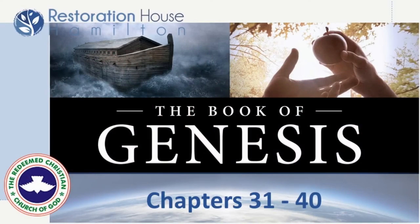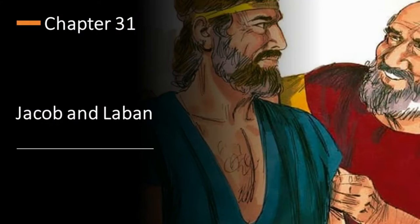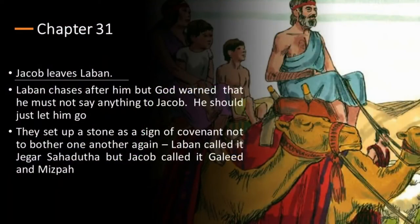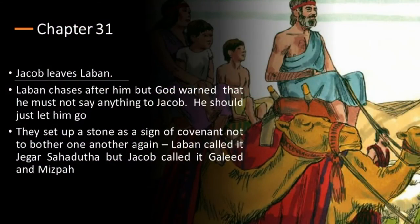Reviewing chapters 31 to 40: In chapter 31, we see the story of Jacob and Laban. Laban is Jacob's father-in-law, and Jacob worked with him for over 20 years. Jacob leaves Laban, and Laban chases after him, but God warned Laban not to do him any harm. When they met, they agreed to set up a stone between them — Laban would not cross to where Jacob is and Jacob would not cross to where Laban is. Laban called the place Jegar-Sahadutha while Jacob called it Galeed and Mizpah.